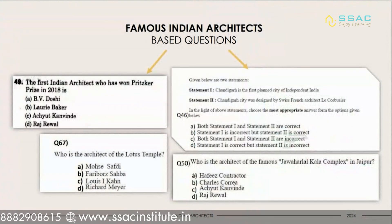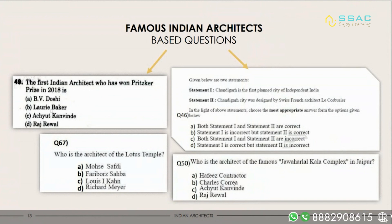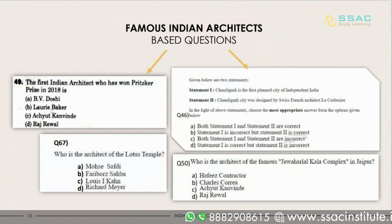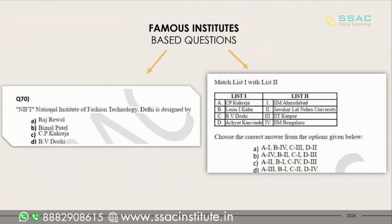Next are famous Indian architects and their works. You need to remember the famous Indian architects, their famous awards, the books they have written, and their famous works. For example, questions have come on the first Indian architect to win the Pritzker Prize, the planning of Chandigarh city, and the architect of the Lotus Temple — such questions can come from the topic of famous Indian architects.